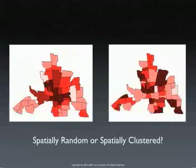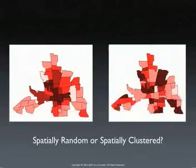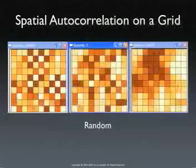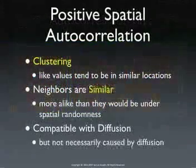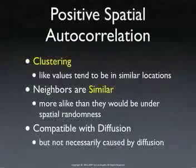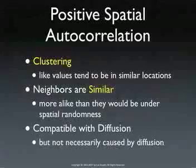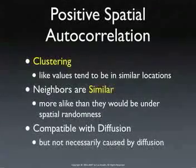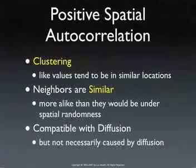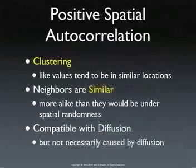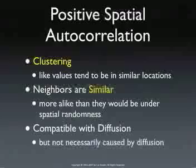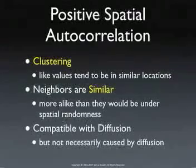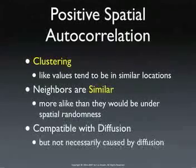Positive spatial autocorrelation is about clustering, but it's important to see the subtle distinction: like values tend to be in similar locations — not necessarily high values or low values. A classic mistake when finding significant positive spatial autocorrelation is to conclude that the high values are located together. It could be some mix of high values and low values being located together. For a global measure of spatial autocorrelation there is no way to distinguish between highs and lows — to do that, we need to go to local spatial autocorrelation.